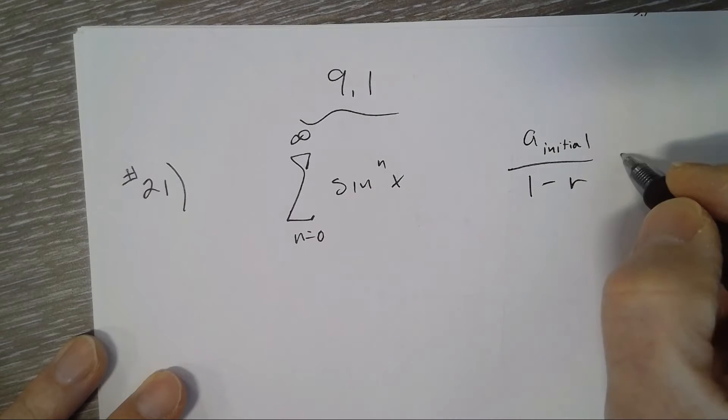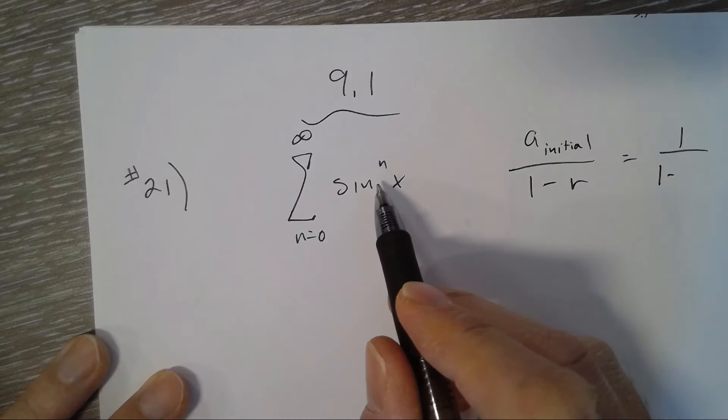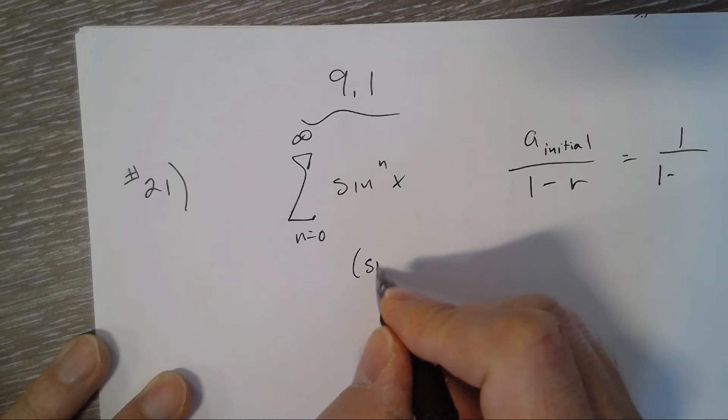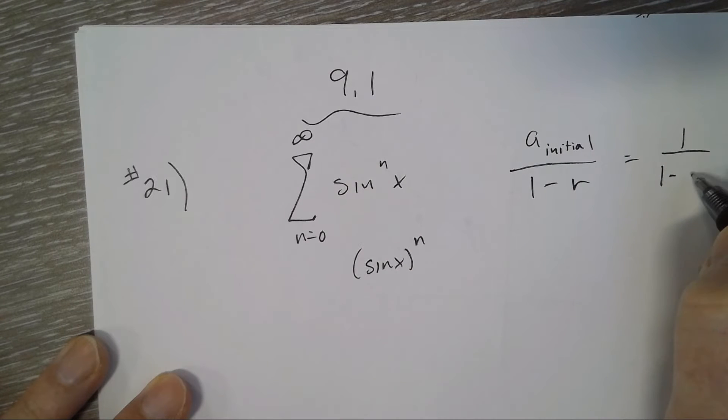So it's 1 over 1 minus the r, which is what you're taking to the nth power. Think of this as sine x to the n, so that's my r. So it's 1 over 1 minus sine x.